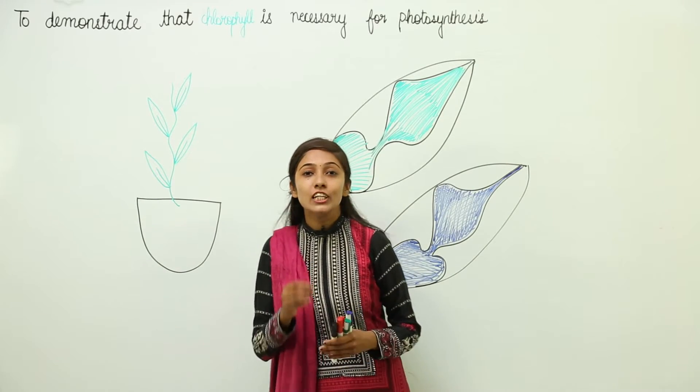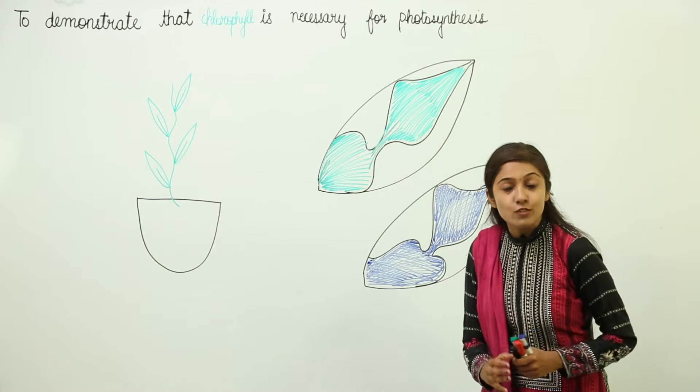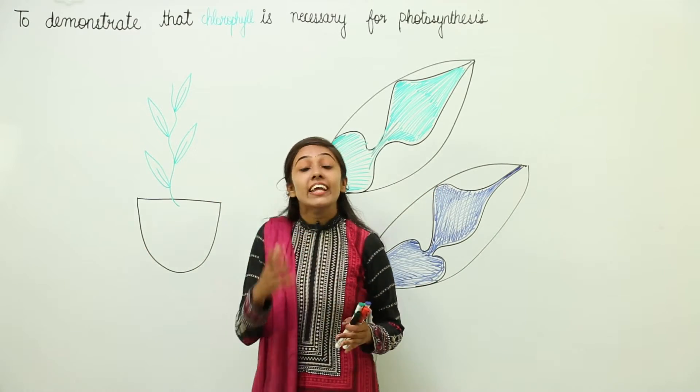Now we are going to demonstrate that chlorophyll is necessary for photosynthesis. To demonstrate this, we are going to take a potted plant with variegated leaves.